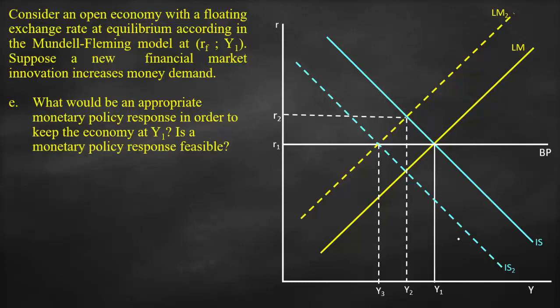The last part of the question would be, what would be an appropriate monetary policy response in order to keep the economy at Y1? Is a monetary policy response feasible? Remember, our original shock was LM curve shifted to the left. When we talk about monetary policy, monetary policy will affect LM curve.